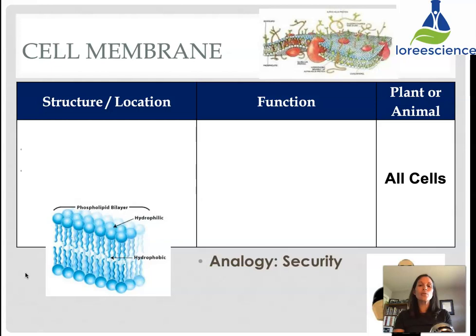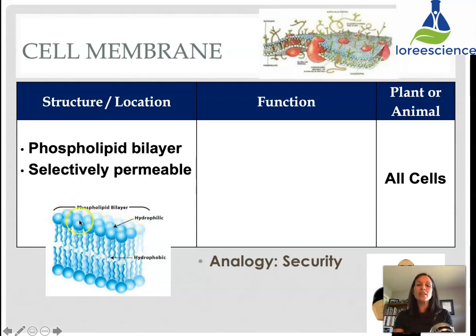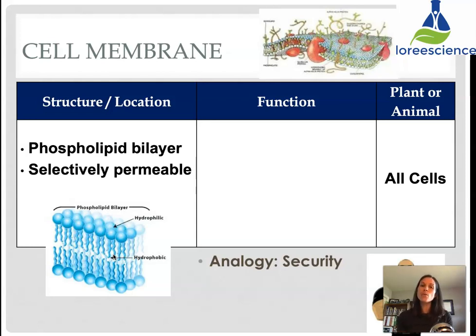In terms of its structure and location, the cell membrane is known as a phospholipid bilayer, meaning it is made up of two distinct layers of molecules called phospholipids. Phospholipids have a hydrophilic, or water-loving, end and a water-hating end. The water-hating end is in the middle, creating a barrier, making the cell membrane selectively permeable — meaning only some things can get through. Large molecules and charged positive or negative molecules cannot get through either.